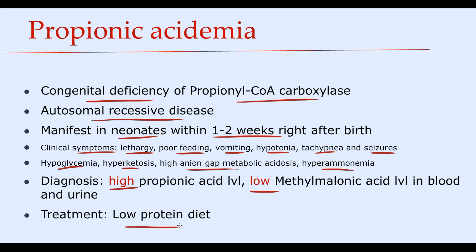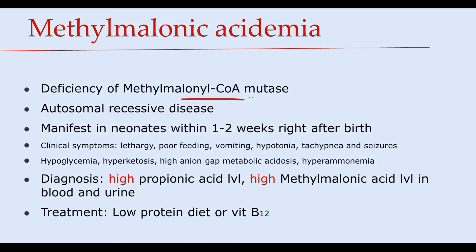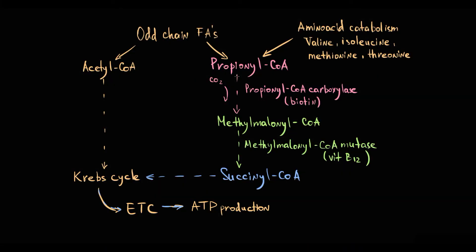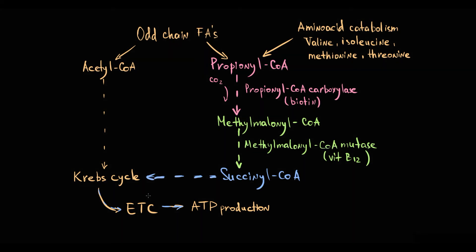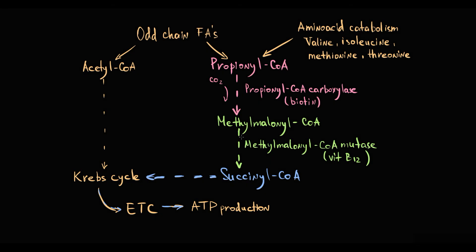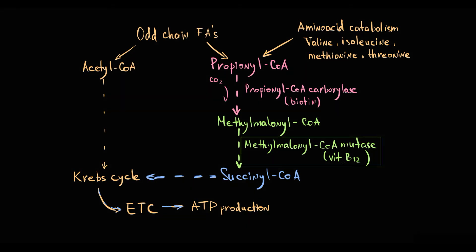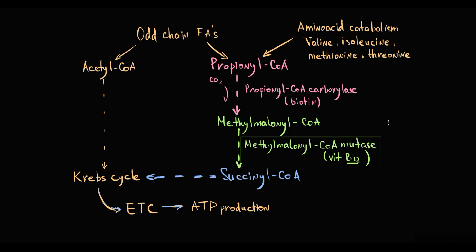The second organic acidemia is called methylmalonic acidemia. It is an autosomal recessive disease with exactly the same clinical presentation and manifestations as propionic acidemia. If propionyl-CoA carboxylase works properly, methylmalonyl-CoA is formed and must be converted into succinyl-CoA, which then enters the Krebs cycle with subsequent energy production. This conversion is carried out by the enzyme methylmalonyl-CoA mutase, which uses vitamin B12 as a cofactor.